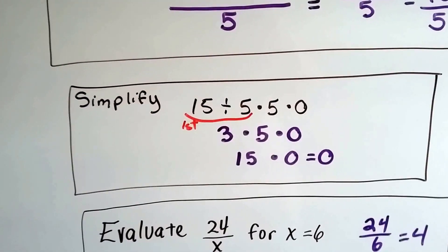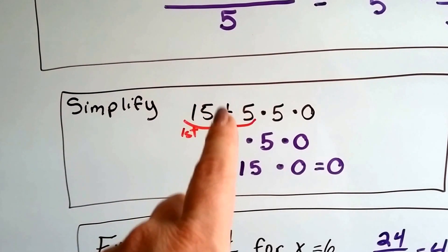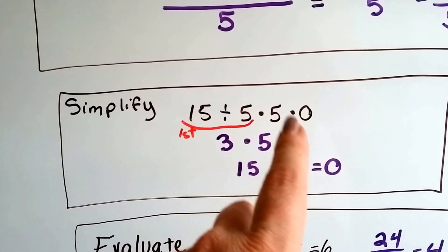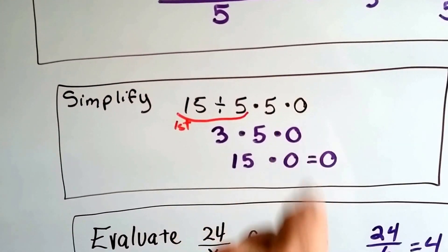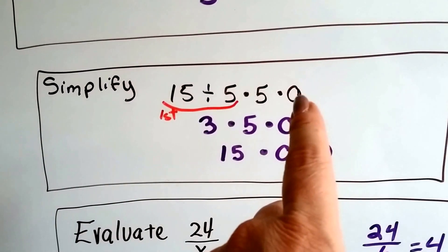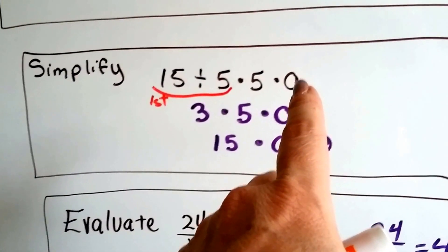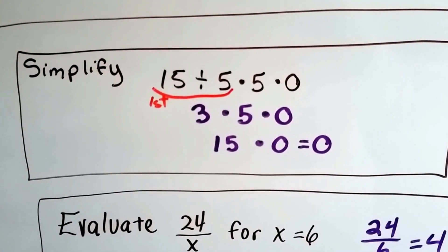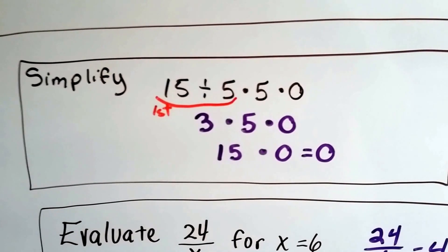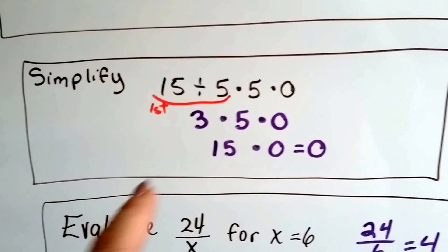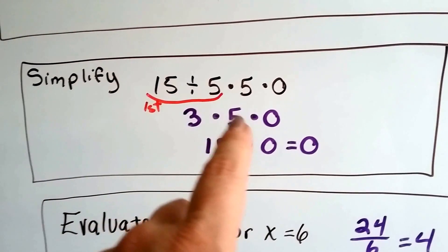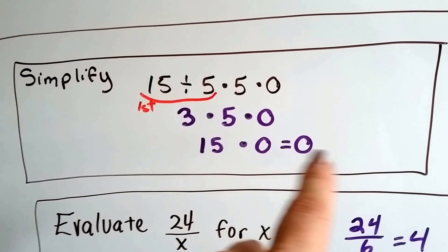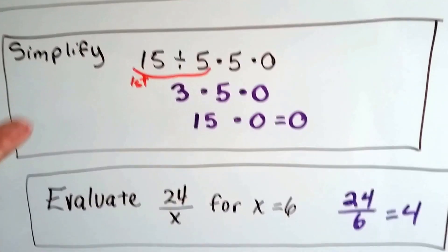What if it says to simplify and we've got 15 divided by 5 times 5 times 0? So we've got division here and multiplication back here. Well, actually, this whole thing is going to be multiplied by 0, so you know what's going to happen—it's going to be 0. Anything times 0 is 0. We do 15 divided by 5 is 3, 3 times 5 is 15, 15 times 0 is 0. It was 0 anyway.